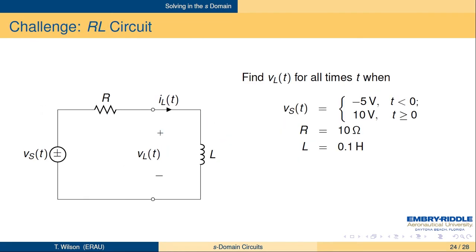Here's one of the problems you'll work — perhaps the first one. Find the voltage across the inductor for all times T, for the same input: VS equals minus 5 volts when T is less than zero, and 10 volts when T is greater than or equal to zero. This time you have a 10 ohm resistor and a 0.1 Henry inductor.